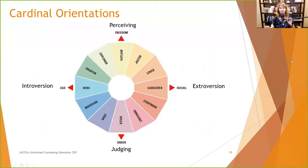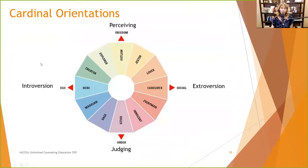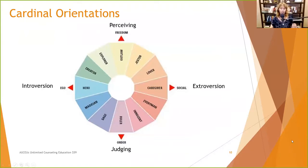Jung identified cardinal orientations. The two he identified early were judging — preferring order, schedules, and lists — and perceiving, being more spontaneous. These carried on to the Myers-Briggs later. Also introversion, being more energized by the internal world and one's own thoughts, versus the external world, being aware of and energized by what's going on outside. Jung used different terms than the Myers-Briggs for personality types — caregiver, lover, jester, outlaw — but was leaning toward the same concepts.